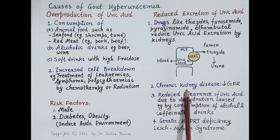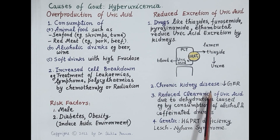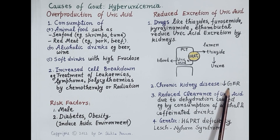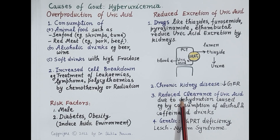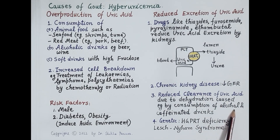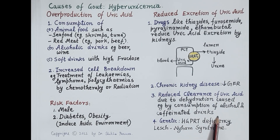Chronic kidney disease reduces glomerular filtration rate, which also reduces excretion of uric acid. In addition, dehydration reduces clearance of uric acid. Consumption of alcohol and caffeinated drinks can cause dehydration, and dehydration reduces excretion of uric acid.